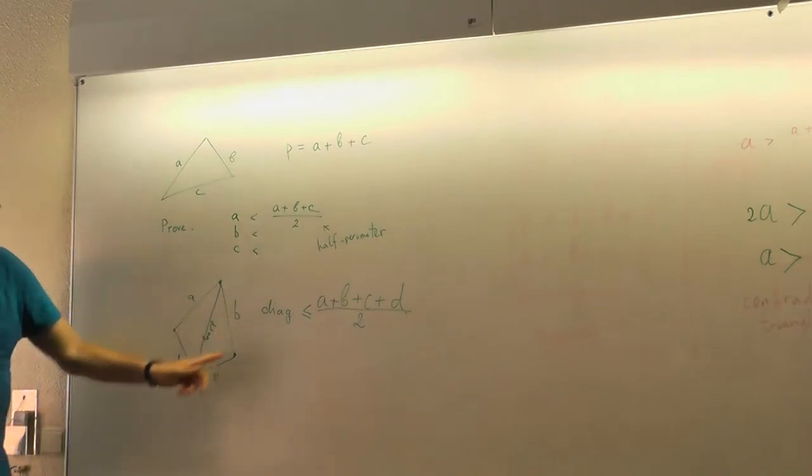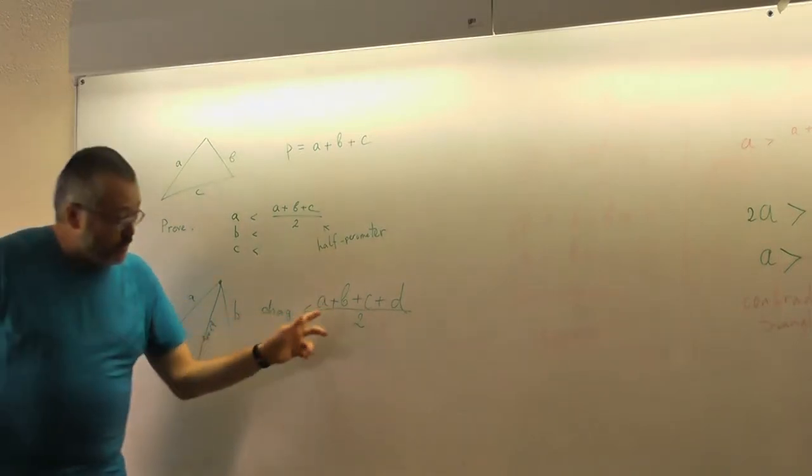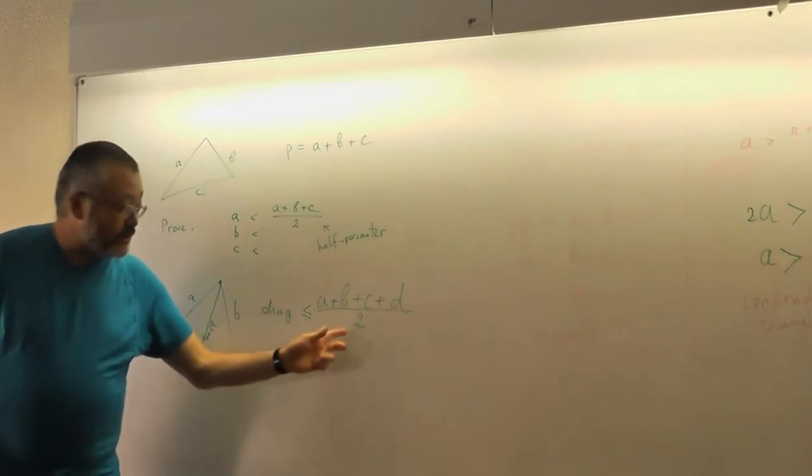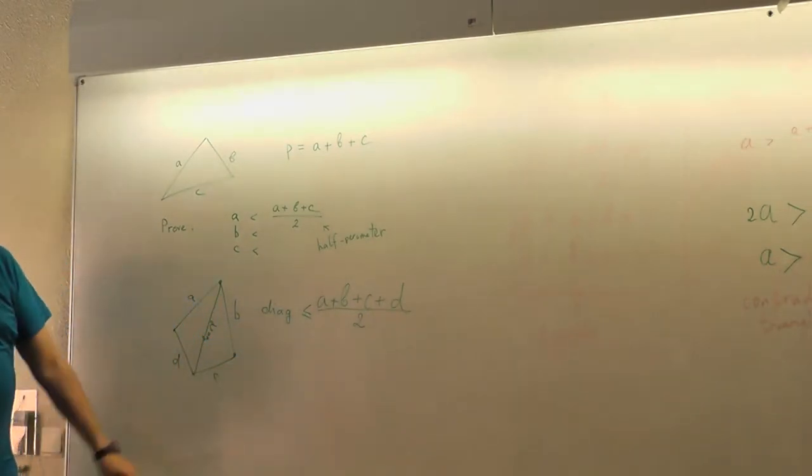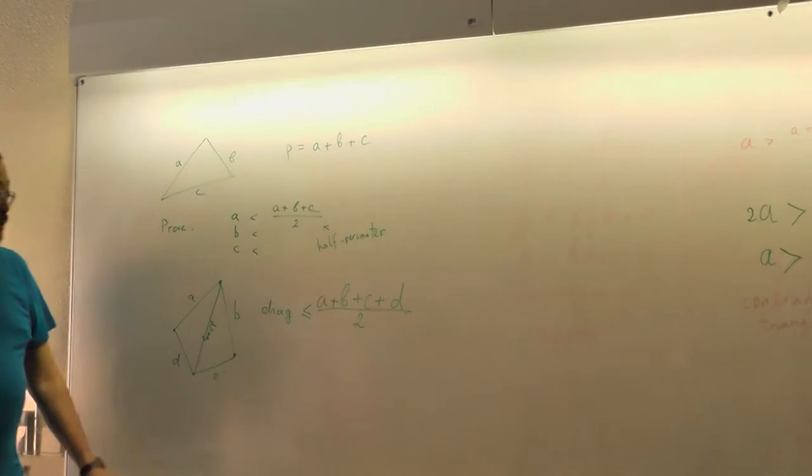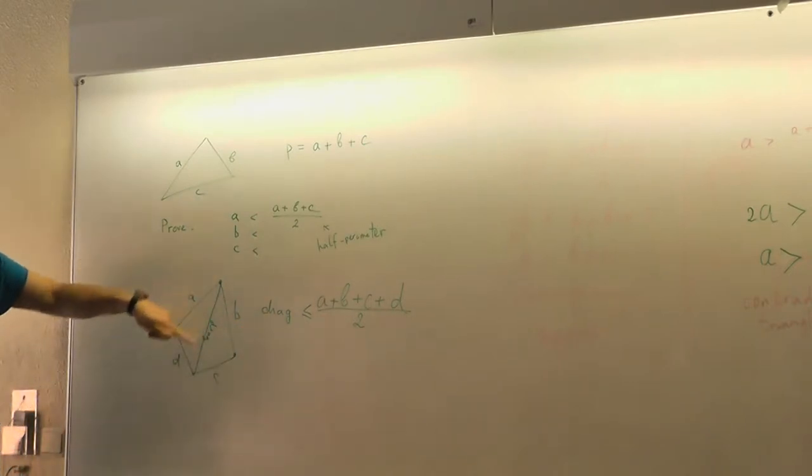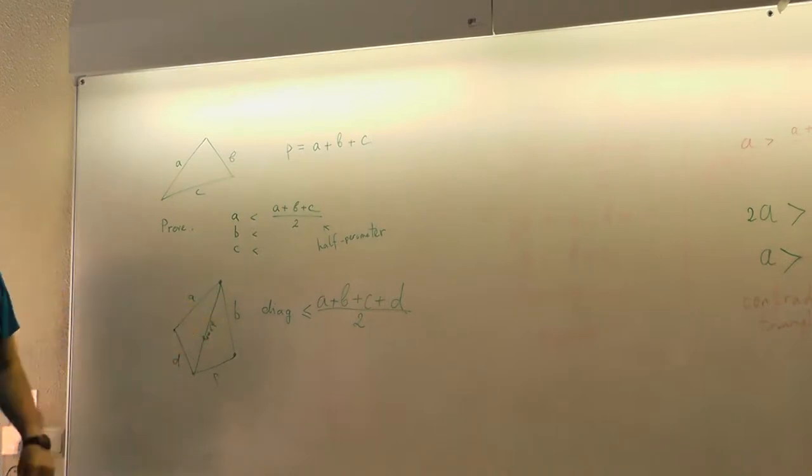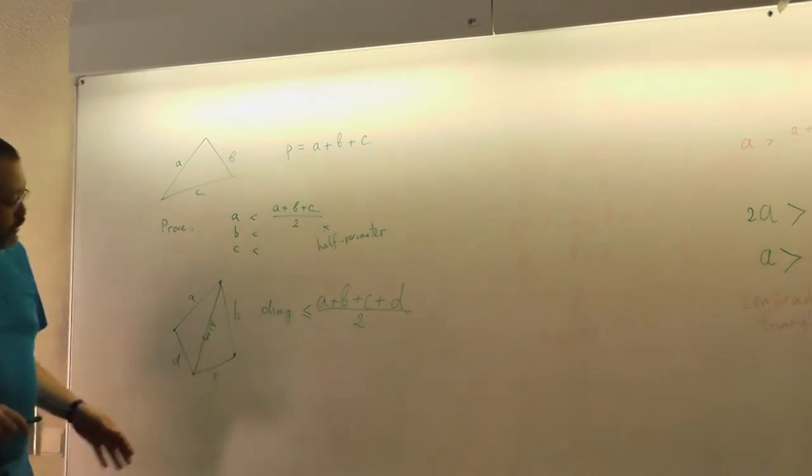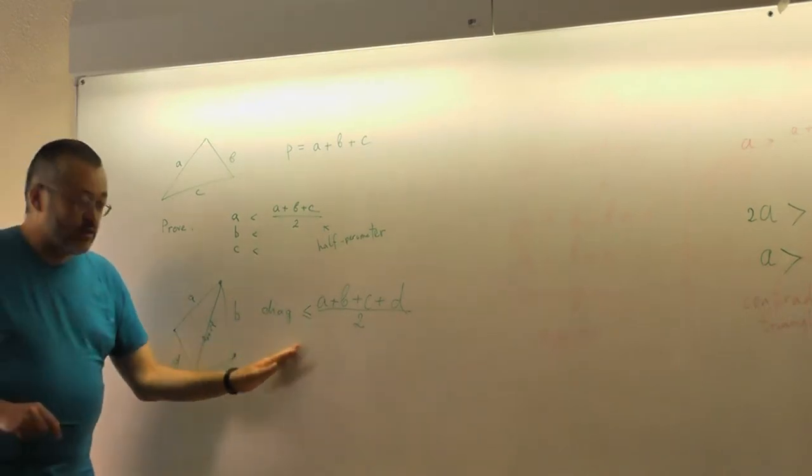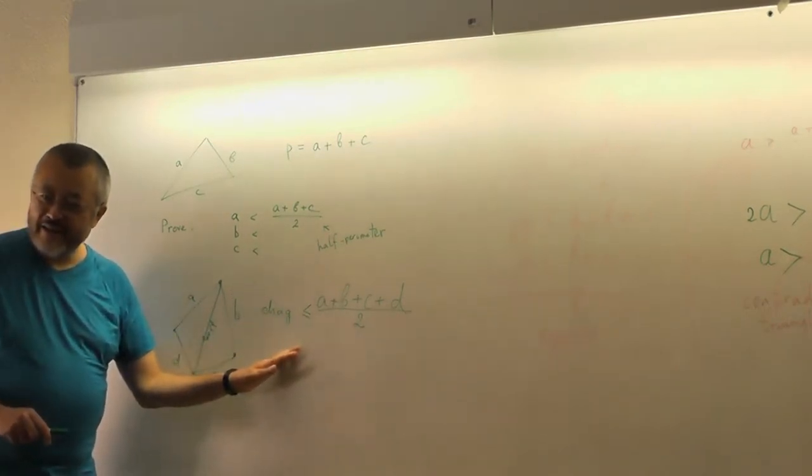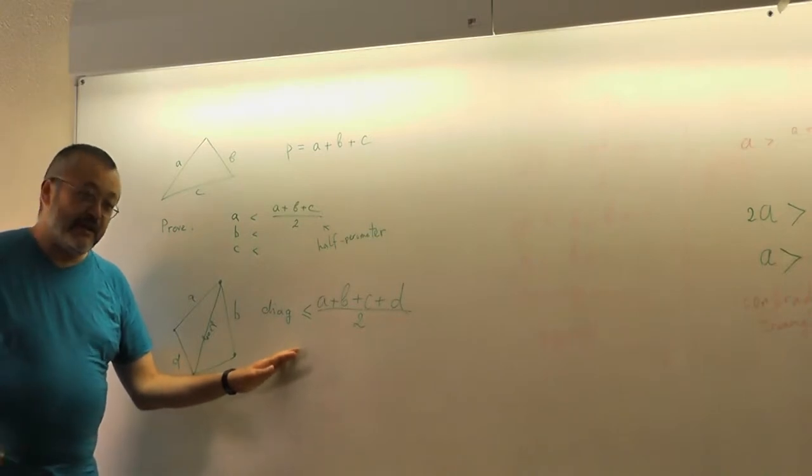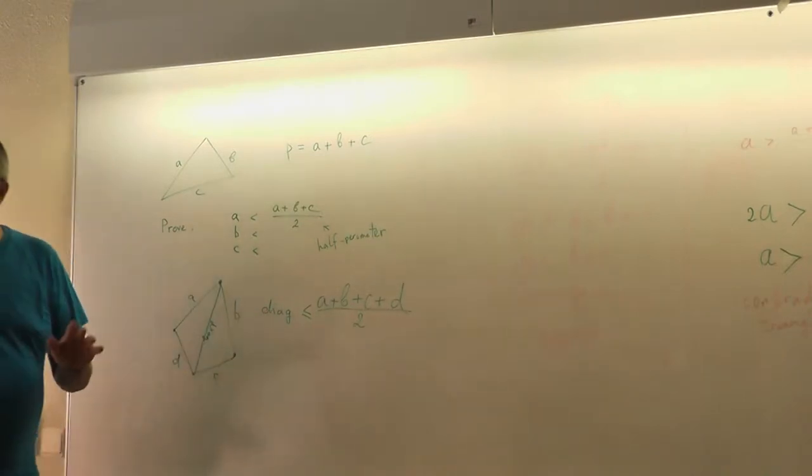So in a quadrilateral with sides A, B, C, D, it has a perimeter and a semi-perimeter. And it turns out that this semi-perimeter will be not less than any of the diagonals. This diagonal or that diagonal? In a proper quadrilateral it's strictly less. Yes, if the quadrilateral is non-degenerate, then it will be strictly less. Any diagonal is less than the semi-perimeter. Okay.